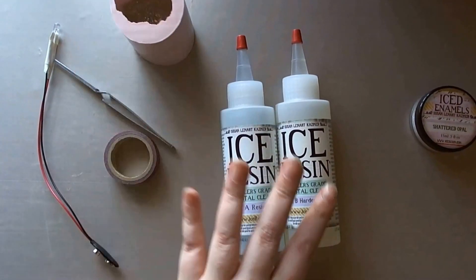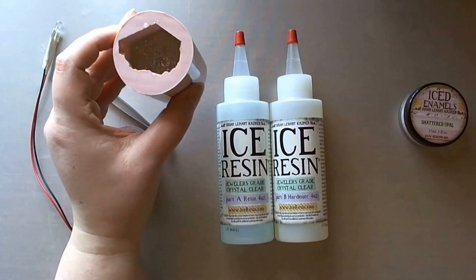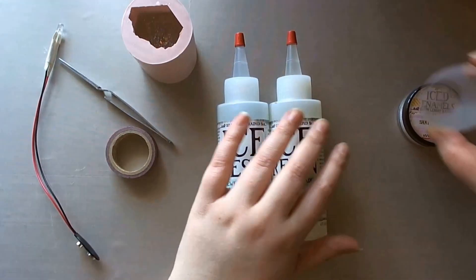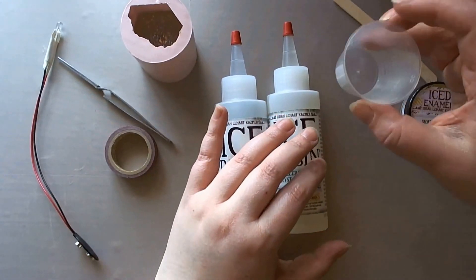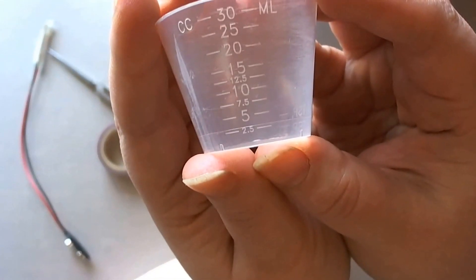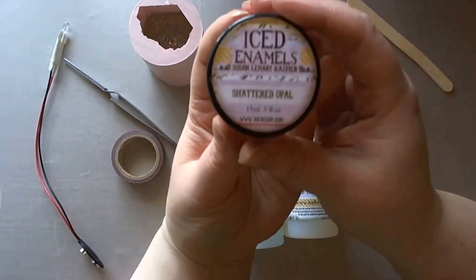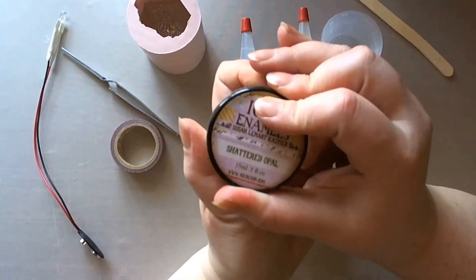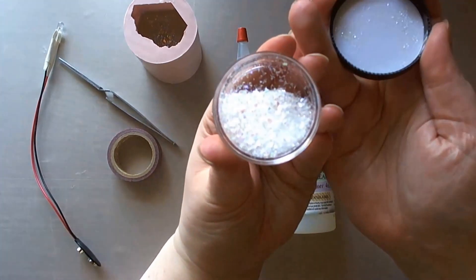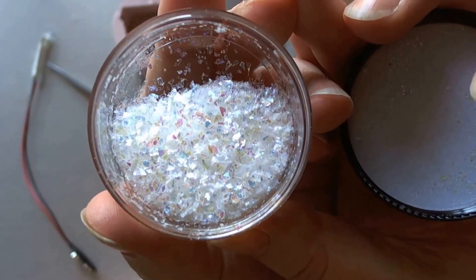I've got my ice resin, my mold which I've already did on a first pour because it takes quite a lot. This is a huge mold. I've got my stirring stick and my mixing cup marked up from ice resin. And I've got the iced enamels in shattered opal because I am adding them in to the mix. This is my favorite part, look at that.